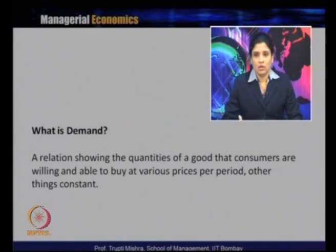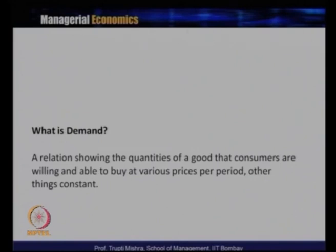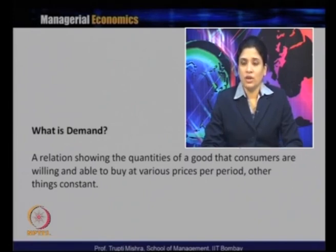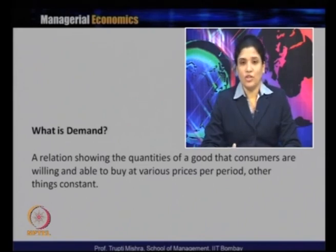We start with the first market force — demand. Demand is basically a relation showing the quantity of a good that consumers are willing and able to buy at various prices per period, other things remaining constant. The other things kept constant include income, market situation, and price forecasts — all variables that affect demand for the product.